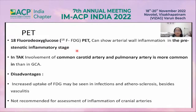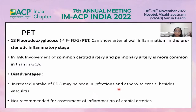18-fluorodeoxyglucose PET scan can show arterial wall inflammation in the pre-stenotic inflammatory stage. In Takayasu, there is more involvement of the common carotid and pulmonary arteries than in giant cell arteritis. Increased FDG uptake may also be seen in infections and atherosclerosis, and PET is not recommended for assessment of cranial arteries.